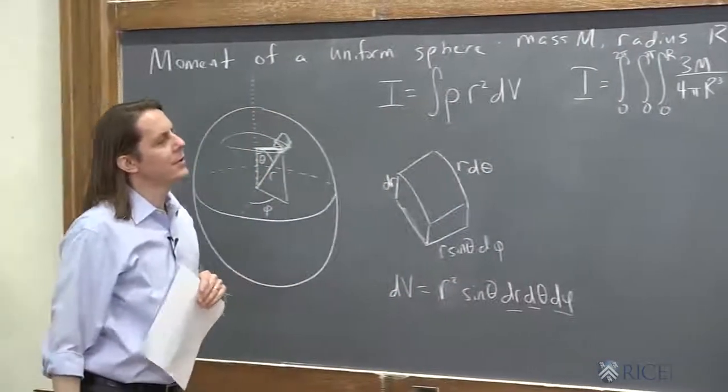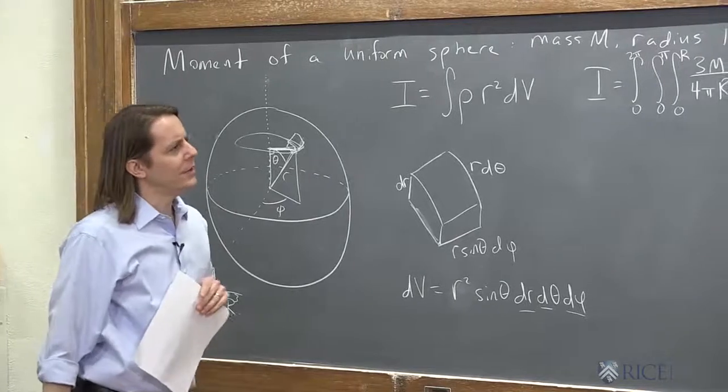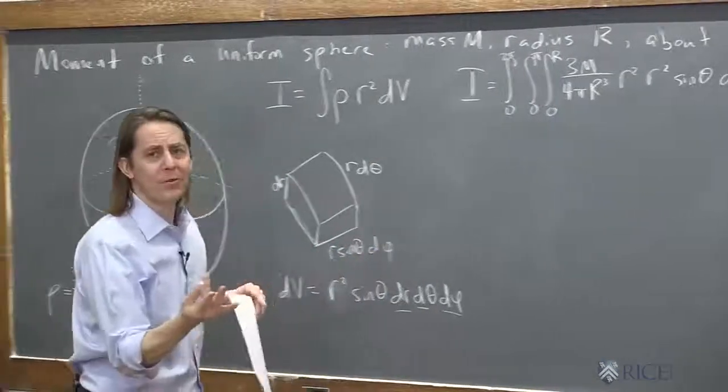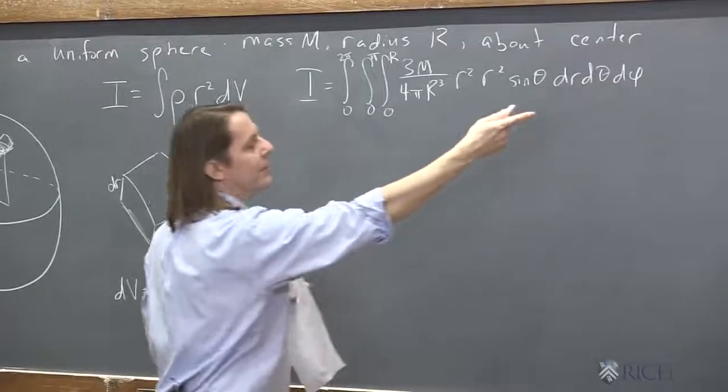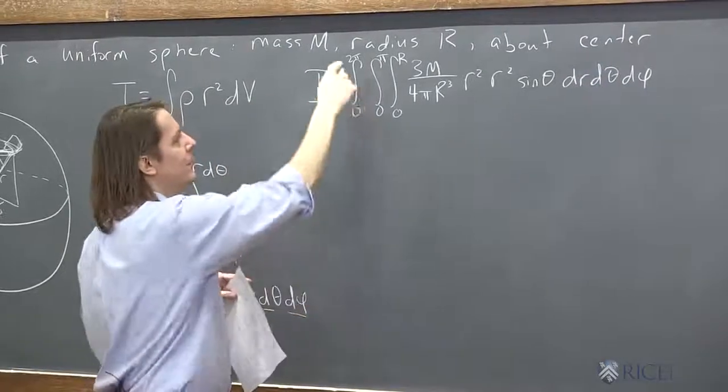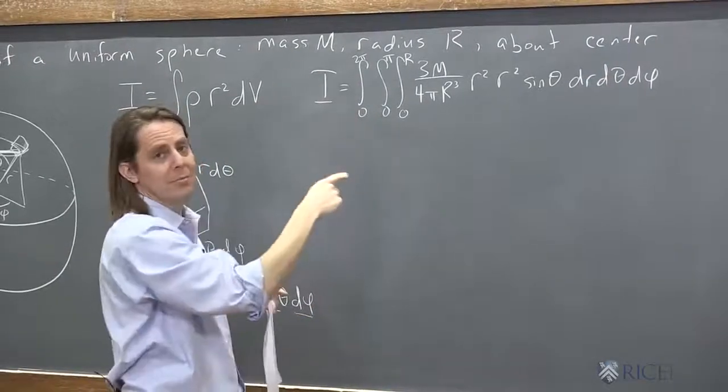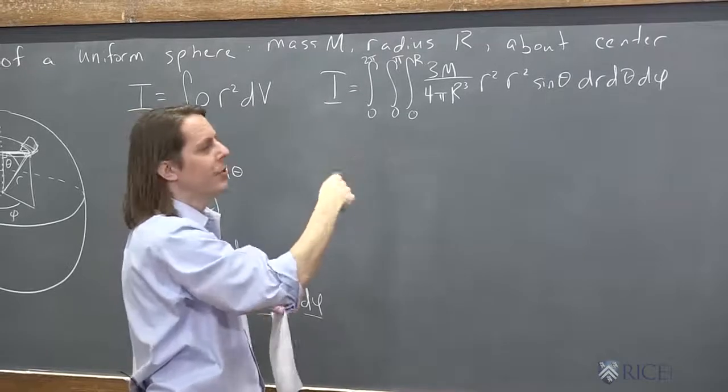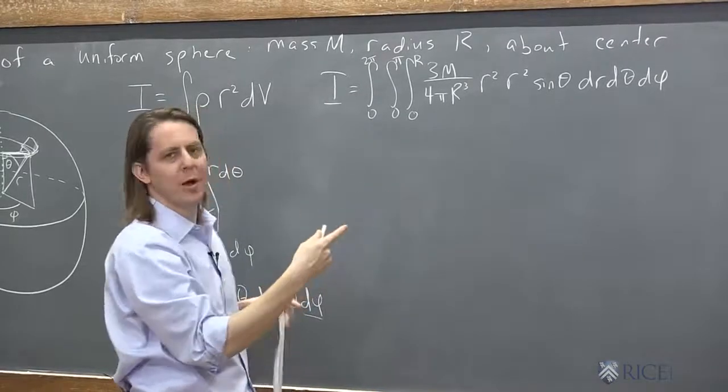Let's just do the phi integral first because there's no phi in here. So dφ, integral of dφ is φ, evaluated at 2π it's 2π, minus evaluated at 0 is 0. So the phi integral just gives you a 2π.